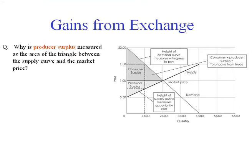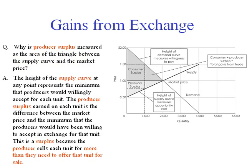So let us now ask the question: why is producer surplus measured as the area of the triangle between the supply curve and the market price? The answer is that the height of the supply curve at any point represents the minimum that producers would willingly accept for each unit — in other words, the opportunity cost.